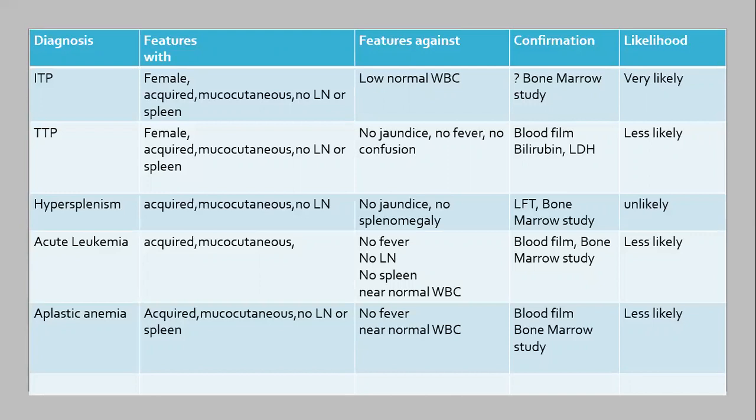The third differential diagnosis is hypersplenism, a well-known cause of thrombocytopenia. Supporting features include the thrombocytopenia and no lymphadenopathy. Against this diagnosis is the absence of evidence of chronic liver disease and no splenomegaly. Therefore, portal hypertension causing hypersplenism is less likely. To exclude this condition, a bone marrow study — usually normal in these patients — and liver function tests are needed. In the absence of splenomegaly, hypersplenism is an unlikely cause of thrombocytopenia in this patient.